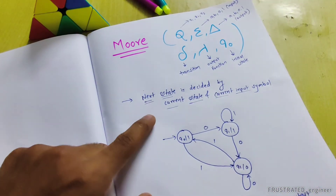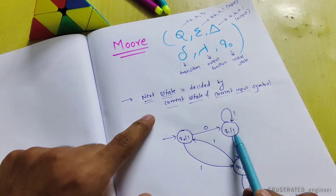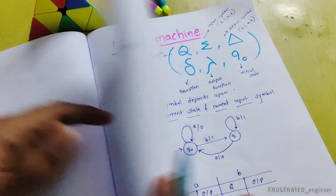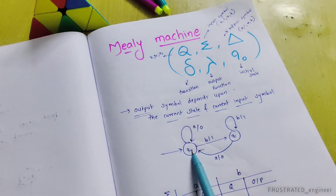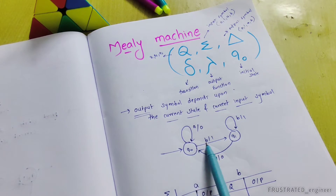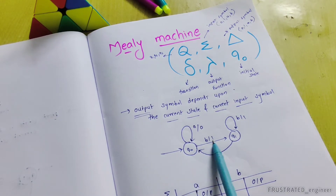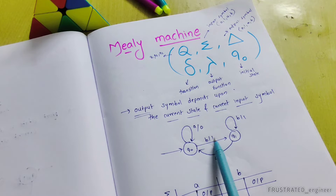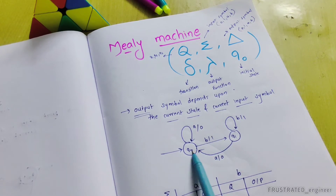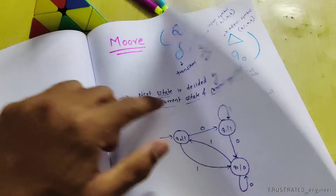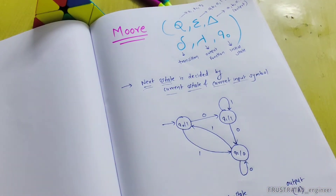The output symbol depends on the current state and the current input. The next state depends on these two. The output symbol here — this and this — will depend on current state and input. So in the Moore Machine, the output symbol depends on current state and input.